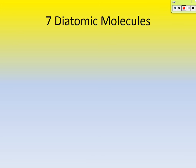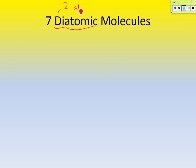Before we get started into balancing word equations, we've got to talk about something first, and it's called the diatomic molecules. Hopefully you're following along in your Chapter 6 guided notes. Diatomic molecules — I want you to write this. What does 'di' mean? Di means two. So di means two and atomic means atoms. These are two-atom molecules, and there are seven of them.